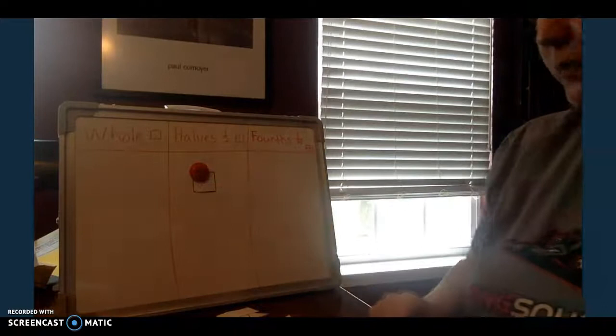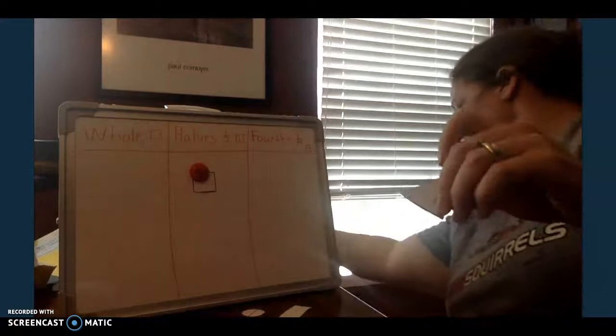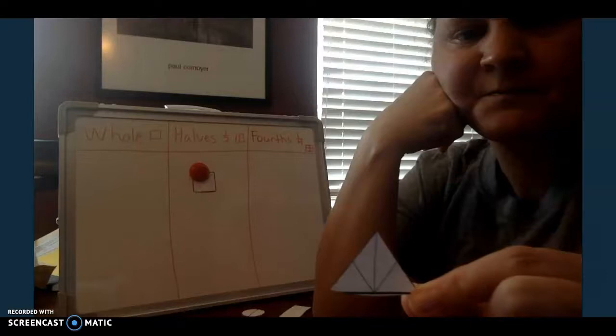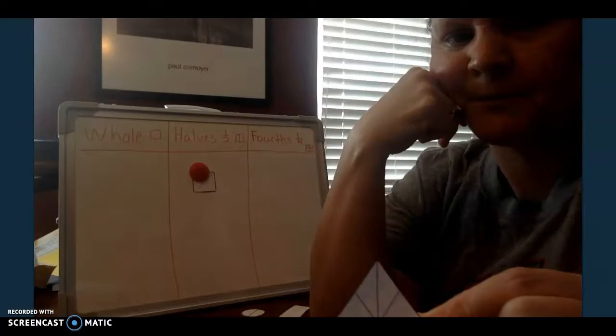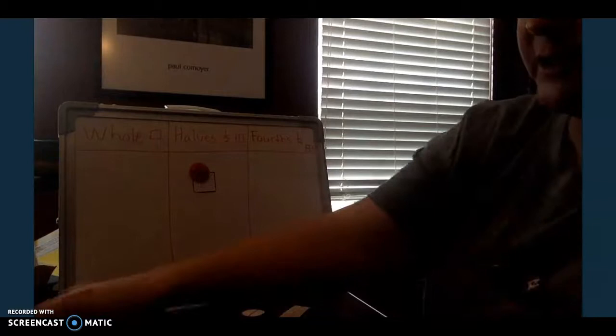All right, let's look at another one. How many equal parts? Can you see it? Count them. Four, right? So is it a whole, halves, or fourths? Good. It goes under fourths because there are four equal parts.